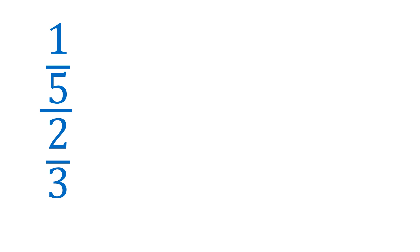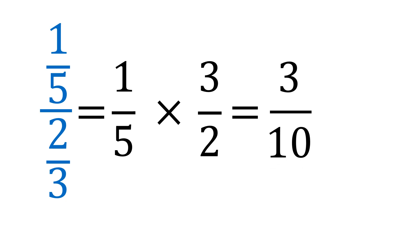To simplify, we divide the numerator by the denominator. So this is equal to 1 fifth divided by 2 thirds. We keep, change, and invert. This is equal to 1 times 3 is 3, 5 times 2 is 10. And that's the final answer.